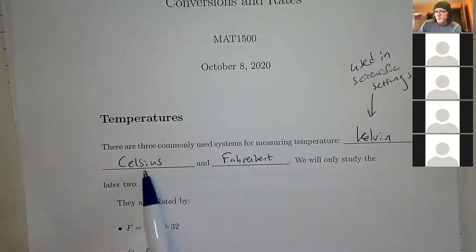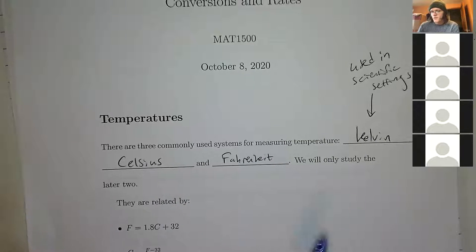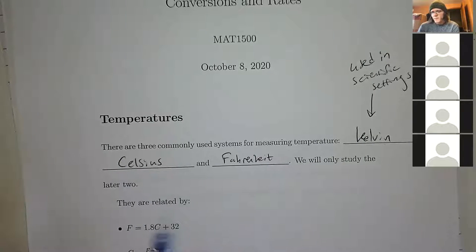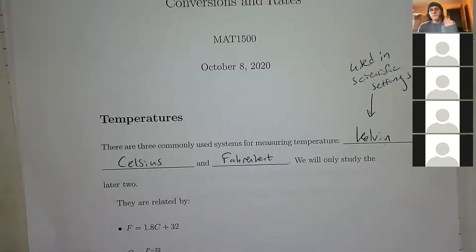Celsius is used in most of the world; we use Fahrenheit. Unlike metric vs. imperial, where metric is very orderly and imperial is messy, Celsius and Fahrenheit are both somewhat arbitrary — they're basically the same kind of thing.